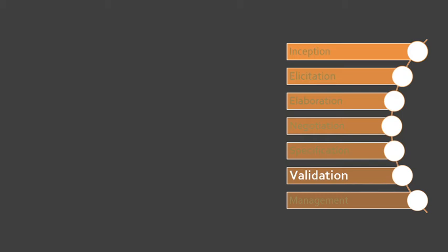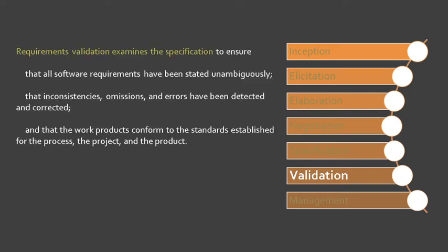Validation Task: The specification products are used to validate the requirements collected by the business analyst or the software engineers. During validation, the customers and software engineers examine the specifications to ensure that all software requirements have been stated clearly. Next, inconsistencies, omissions, and errors have been detected and corrected. And lastly, the work products conform to the standards established for the process, the project, and the product.